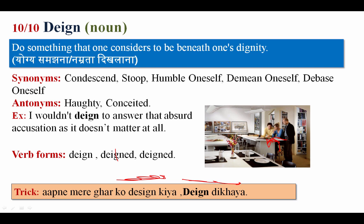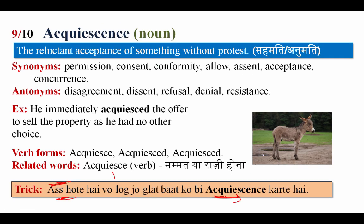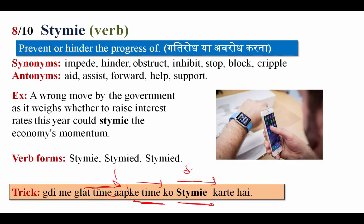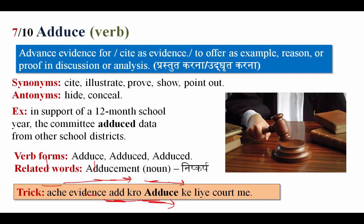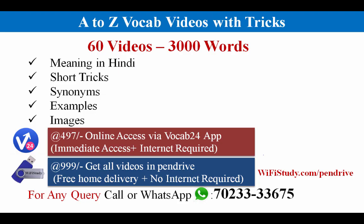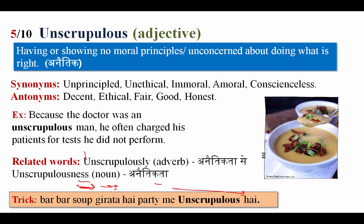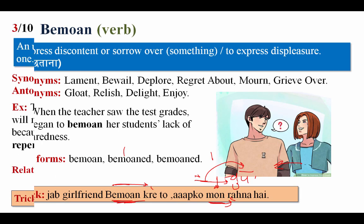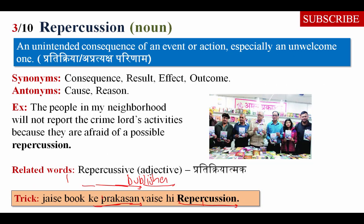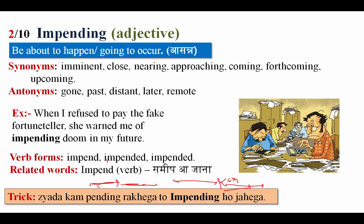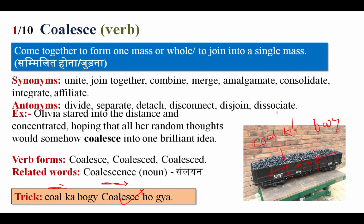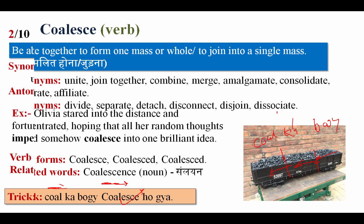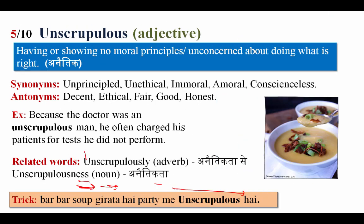Let's revise all the words: deign — narmrata dikhana; acquiescence — maan lena without kisi protest ke; stymie — gatirod karna; adduce — prastut karna; pernicious — hanikarak; unscrupulous — unethic; bemoan — rona dhona, pashtana; repercussion — pratikriya; impending — jo aane wala waqt hai, be about to happen; coalesce — sammilit hona, ekhatta hona.